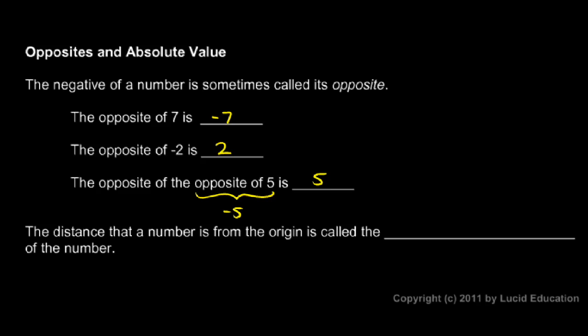If you picture the number line here: 0, 1, 2, 3, and negative 1, negative 2, negative 3. Here's the number 2. The opposite of that is the number negative 2. Both of these numbers are the same distance from 0 — the same distance from the origin — they're just on opposite sides. So they are opposites of each other.